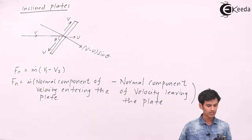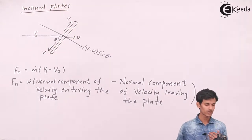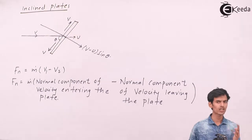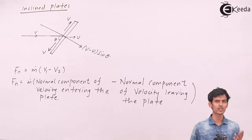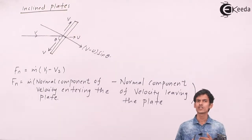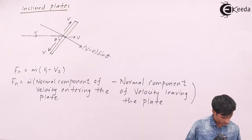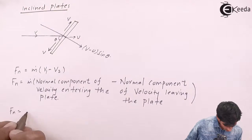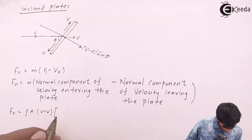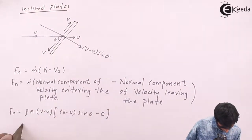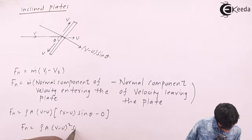Since the plate is moving at velocity U, here again you have to consider the relative velocity. You cannot consider the absolute velocity. Absolute velocity is considered only when the plate is stationary.